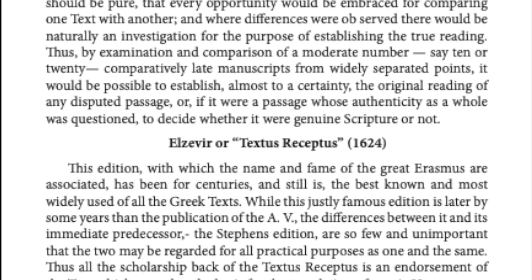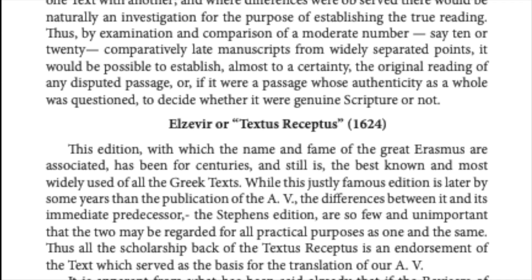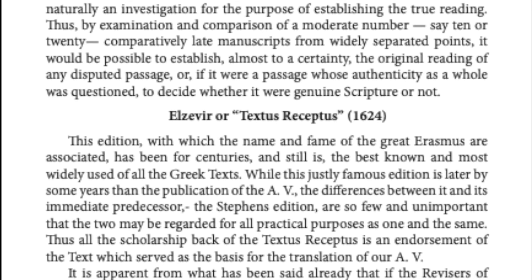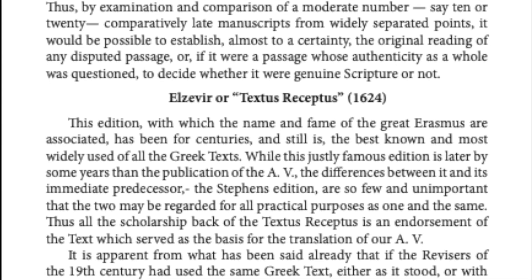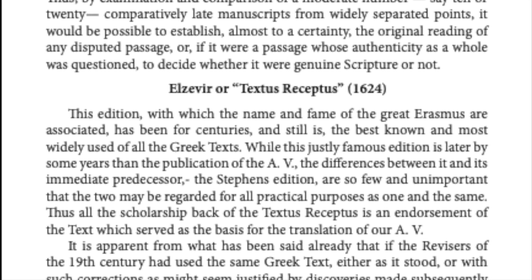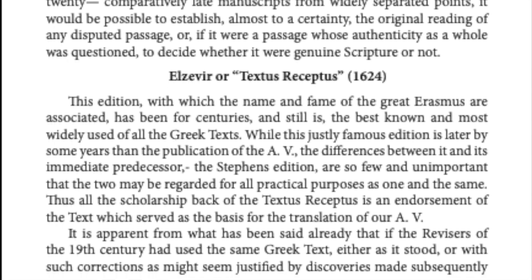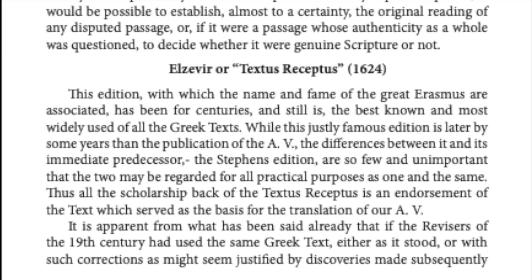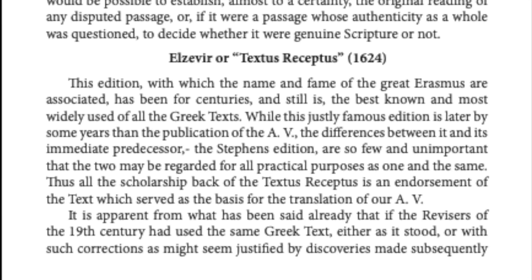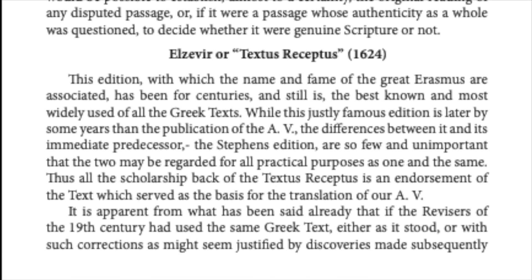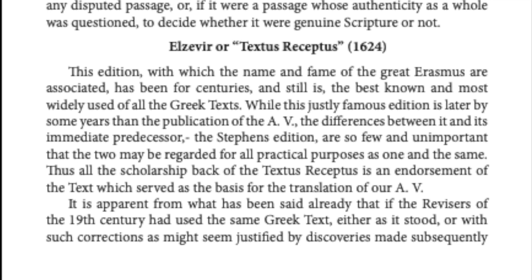Elzevir or Textus Receptus, 1624. This edition, with which the fame of the great Erasmus was associated, has been for centuries and still is the best known and most widely used of all the Greek texts. While this justly famous edition is later by some years than the publication of the Authorised Version, the differences between it and its immediate predecessor, the Stevens edition, are so few and unimportant that the two may be regarded, for all practical purposes, as one and the same. Thus all the scholarship back to the Textus Receptus is an endorsement of the text which served as the basis for the translation of our Authorised Version.